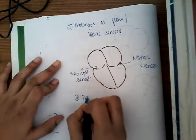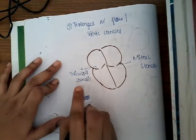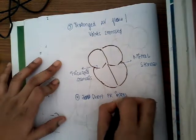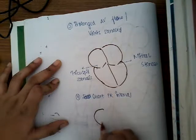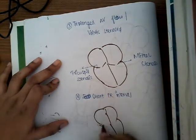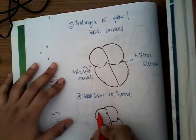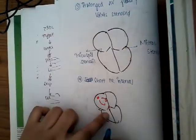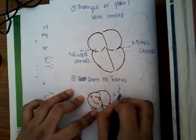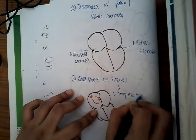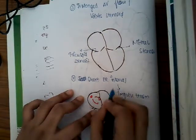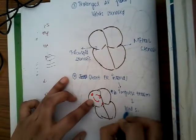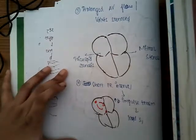The fourth cause is a shorter PR interval. In our last class we learned that a prolonged PR interval causes soft S1. Here, when the PR interval is short, impulse transmission from the sinoatrial node to the AV node is increased, and as a result there is loud S1.